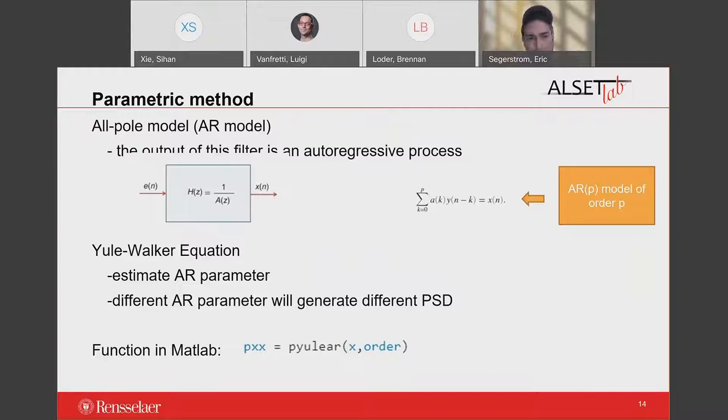The other method is the parametric method. Parametric method is able to produce high resolution signal than the nonparametric when signal length is short. The most commonly used model is called the all-pole model, which the output of this filter is an autoregressive process. Therefore, it is also known as the AR model. AR model is an expression for a type of random process, which uses linear combinations of past variable values to predict the target variable. The Yule-Walker equation is the method to estimate AR parameter of the AR model. Changes in parameter will alter time series patterns, which also demonstrates that different AR parameters will generate distinctive PSD estimates.